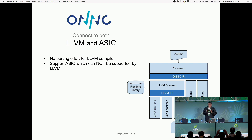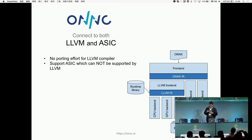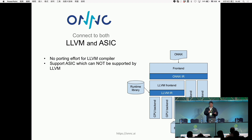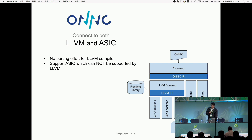For customers with a new DLA: if the DLA already has LLVM support, in ONC we can connect that device directly, because we can generate LLVM bitcode directly. So if you already have LLVM, you have no porting effort for ONC. But for some devices — for example, customers whose devices only support convolution and GNN — those cannot be supported by LLVM. Then they need to write a new ONC backend. So ONC can support both LLVM-based and ASIC-only devices.